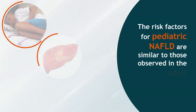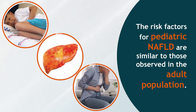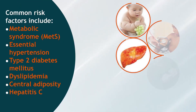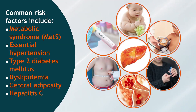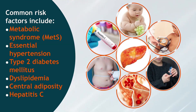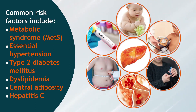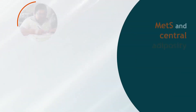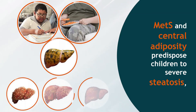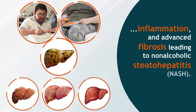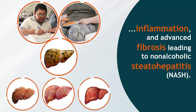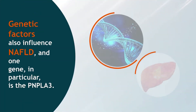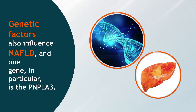The risk factors for pediatric NAFLD are similar to those observed in the adult population. Common risk factors include metabolic syndrome (MetS), essential hypertension, type 2 diabetes mellitus, dyslipidemia, central adiposity, and hepatitis C. MetS and central adiposity predispose children to severe steatosis, inflammation, and advanced fibrosis, leading to non-alcoholic steatohepatitis (NASH).